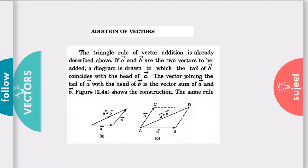So we are just adding, and for adding, what we do is we keep the tail of another vector with the head of the first vector. We cannot add by keeping the two tails together. This thing you need to keep in mind—this is the basic rule.